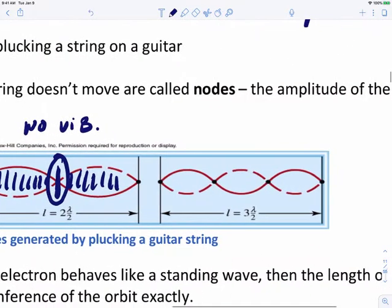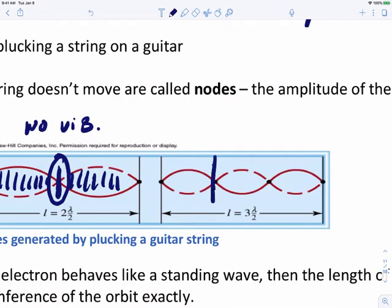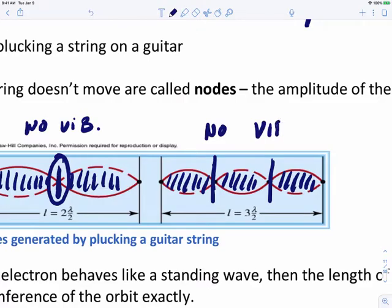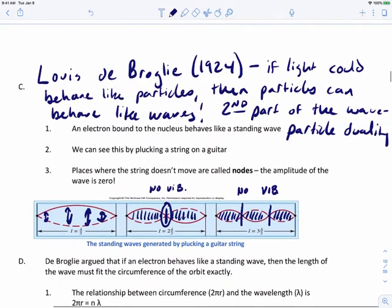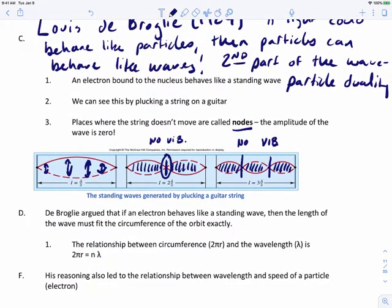Or if you put two clamps down the middle, you can have the string vibrate here, in the middle part, and on the right hand side. But where those clamps are, no vibration. What we've done is create something called a node. Every time we put a clamp down on the guitar string, we've created a place where there's no amplitude whatsoever. What that means for us is that the electron can't be there.